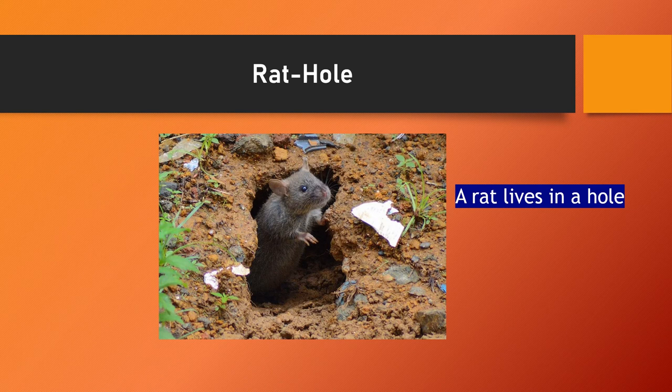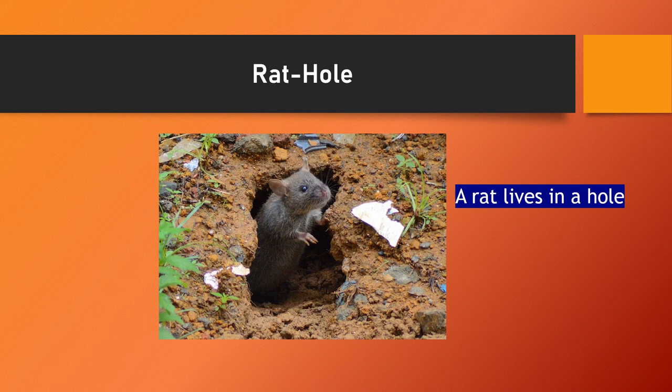Now this is the last animal. This is a tiny rat, and the home of a rat is called a hole. So where does a rat live? A rat lives in a hole. We can see the hole also where the rat is living. R-A-T, rat. And H-O-L-E, hole.